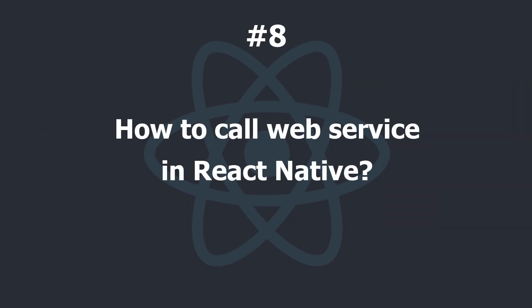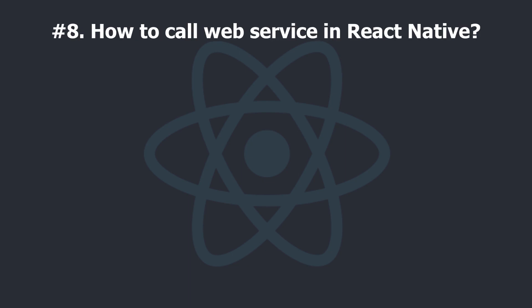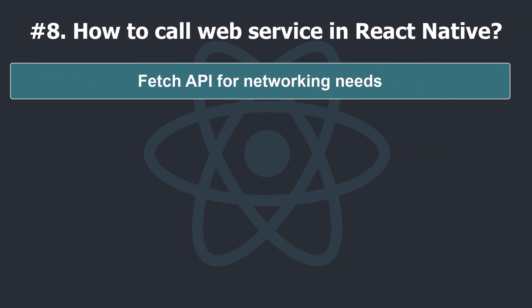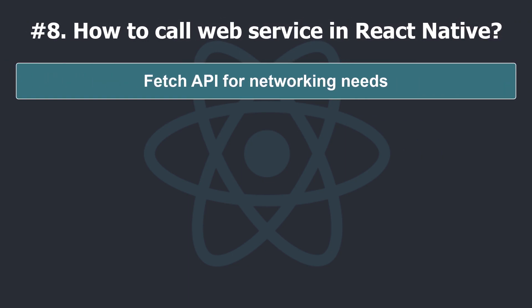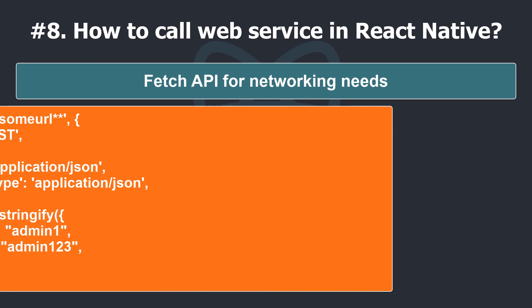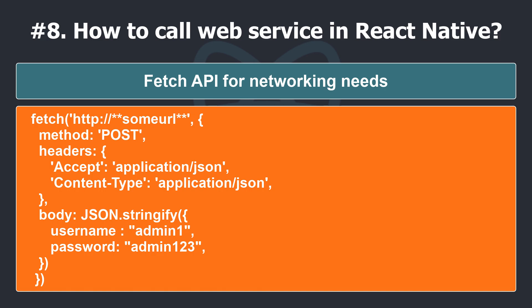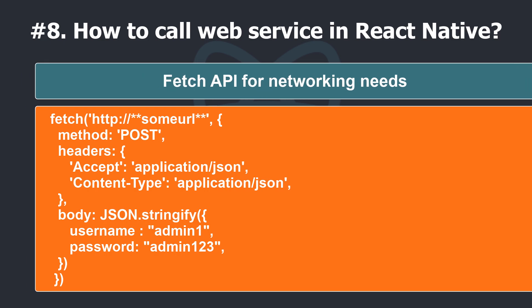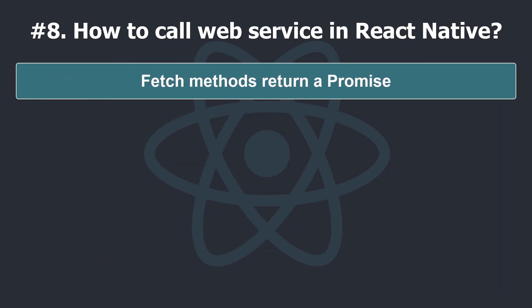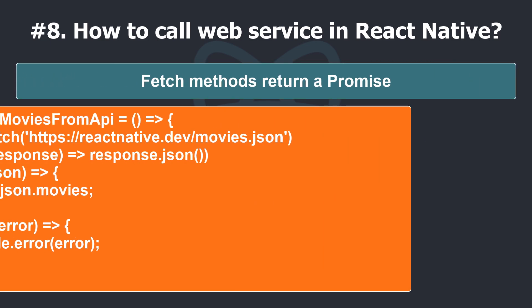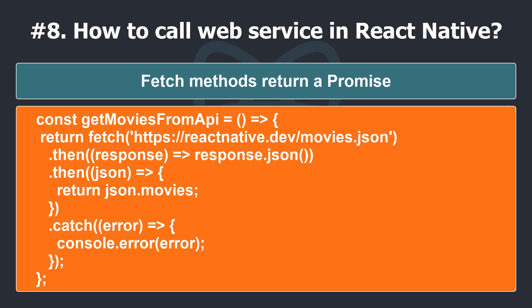How to call a web service in React Native? React Native provides the fetch API for networking needs. To fetch content from an arbitrary URL, we can pass the URL to fetch. Here's an example to call a web service in React Native with fetch. Networking is an inherently asynchronous operation. Fetch methods will return a promise that makes it straightforward to write code that works in an asynchronous manner.